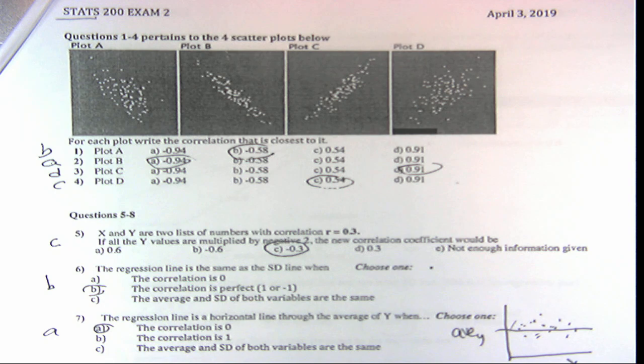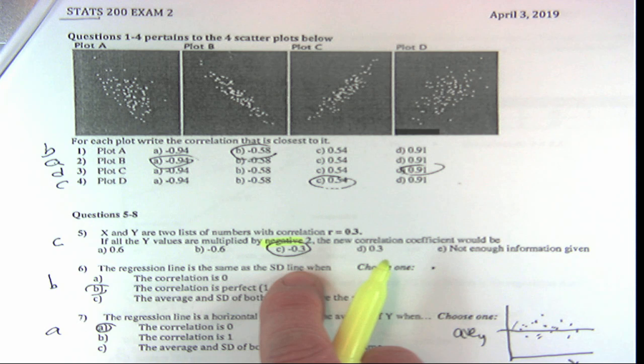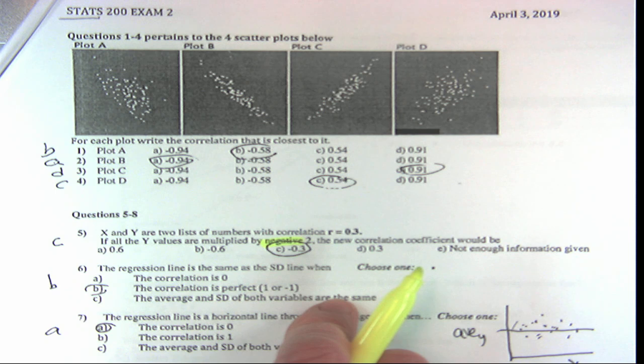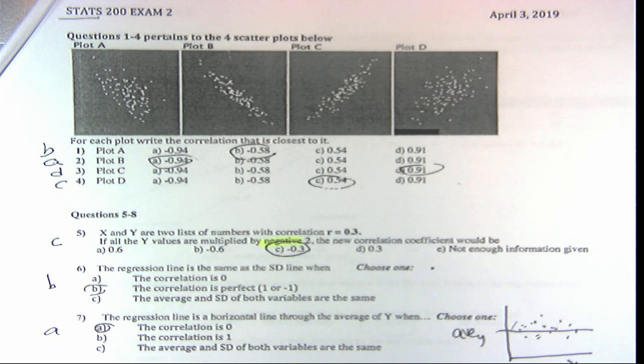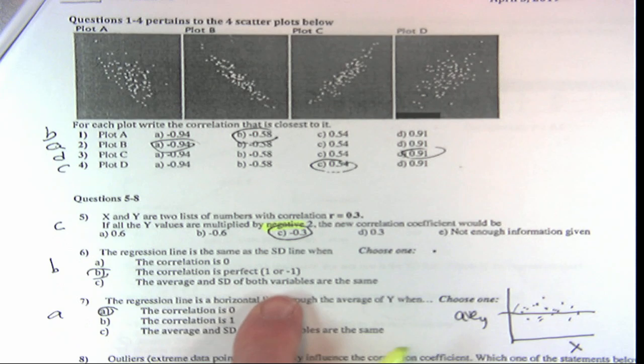Adding a constant or multiplying all the values—as long as you do it to all of them, either all the x's or all the y's—does not change r. The way you can remember that is: the association between height and weight is not going to change if you go from inches to meters or pounds to kilograms; it's not going to change the relationship. What will change it is multiplying by a negative, and if you multiply by negative again, it goes back to where you started.